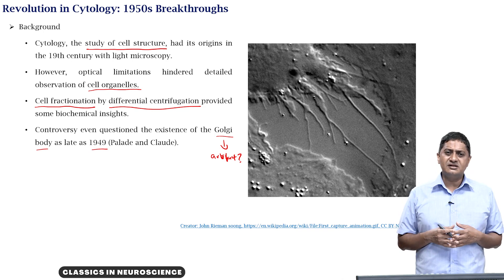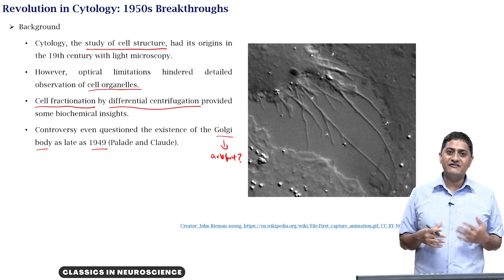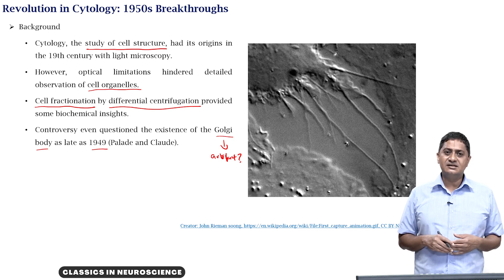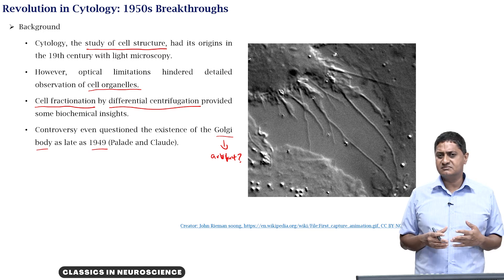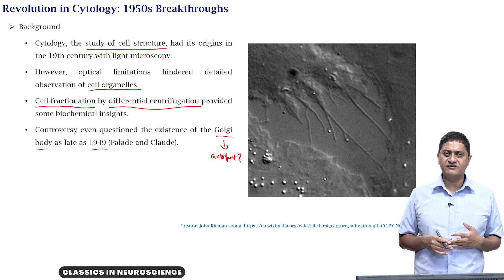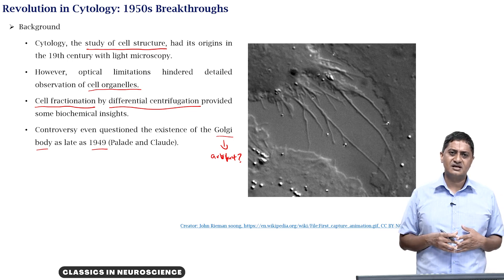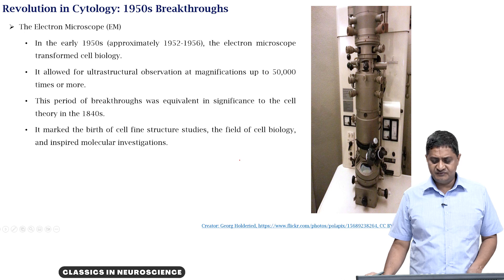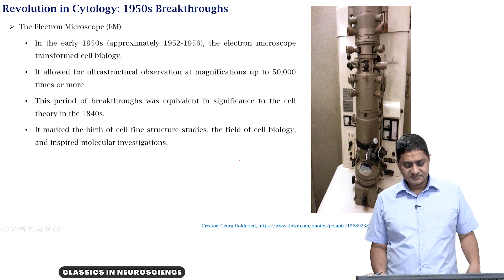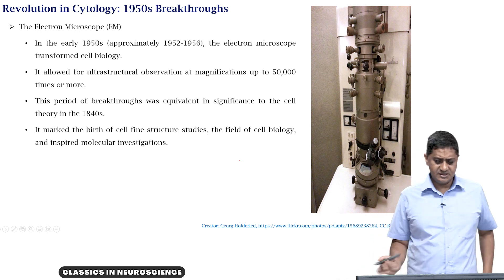The major limitation was the unavailability of appropriate methods to study the inner structure of cells. Until the mid-20th century, until the 1950s, practically the light microscope was the only method available. In the early 1950s, between 1952 and 1956, the electron microscope transformed many fields or subfields of biology, especially cell biology.